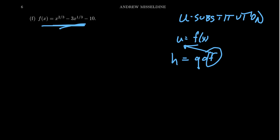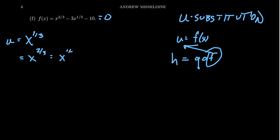For example, f(x) = x^(2/3) - 3x^(1/3) - 10. If we want the x-intercepts, we set this equal to zero. If you make the observation that you see x to the one-third powers, you can apply u-substitution — replace x^(1/3) with u. And x^(2/3) is the same as x^(1/3) squared, which is u-squared.